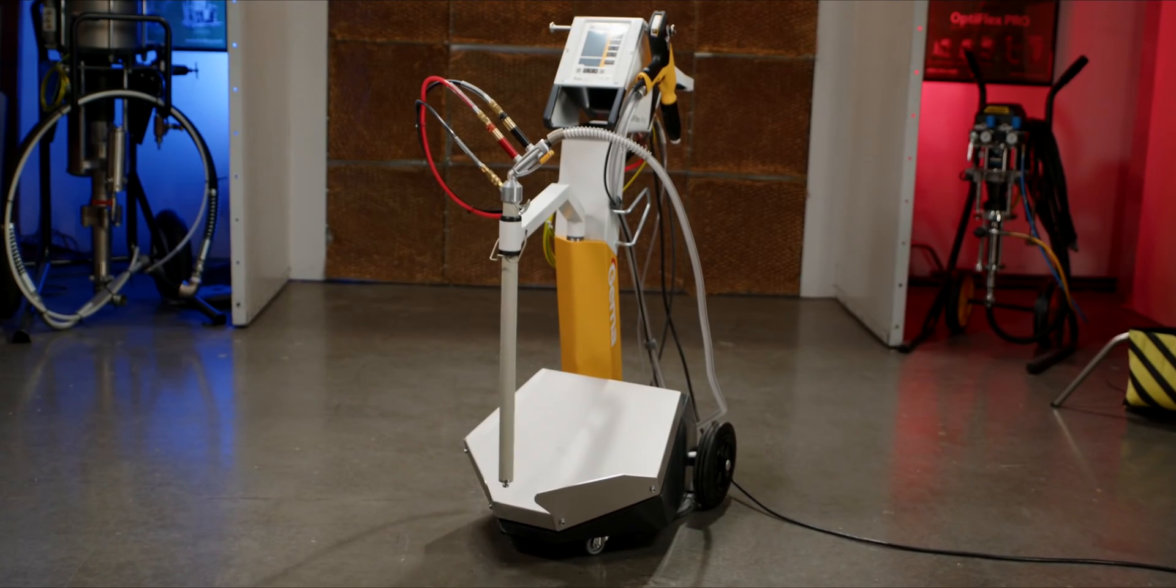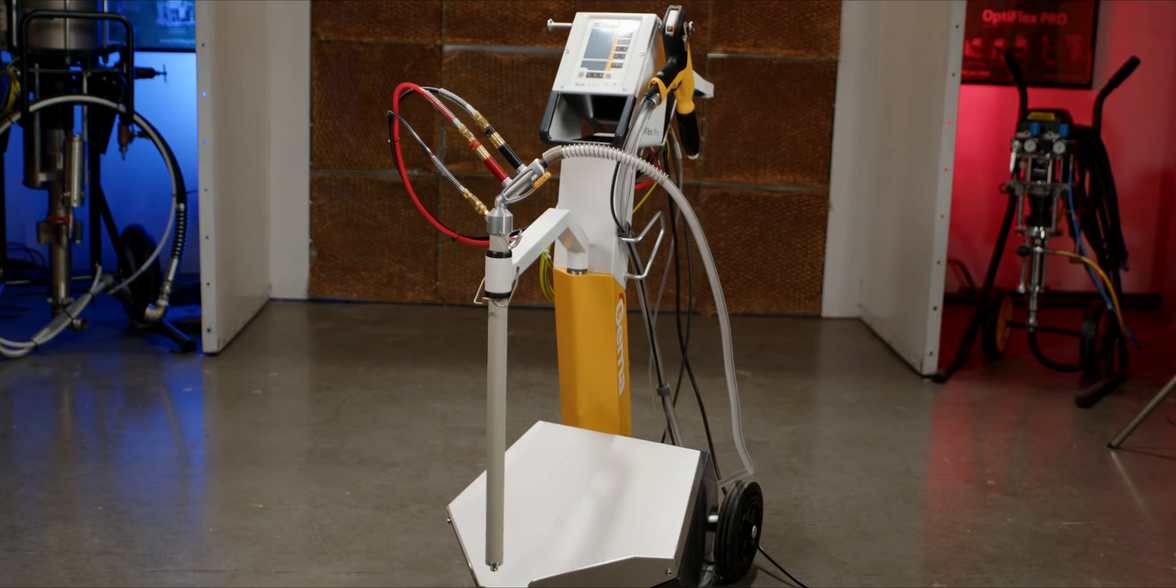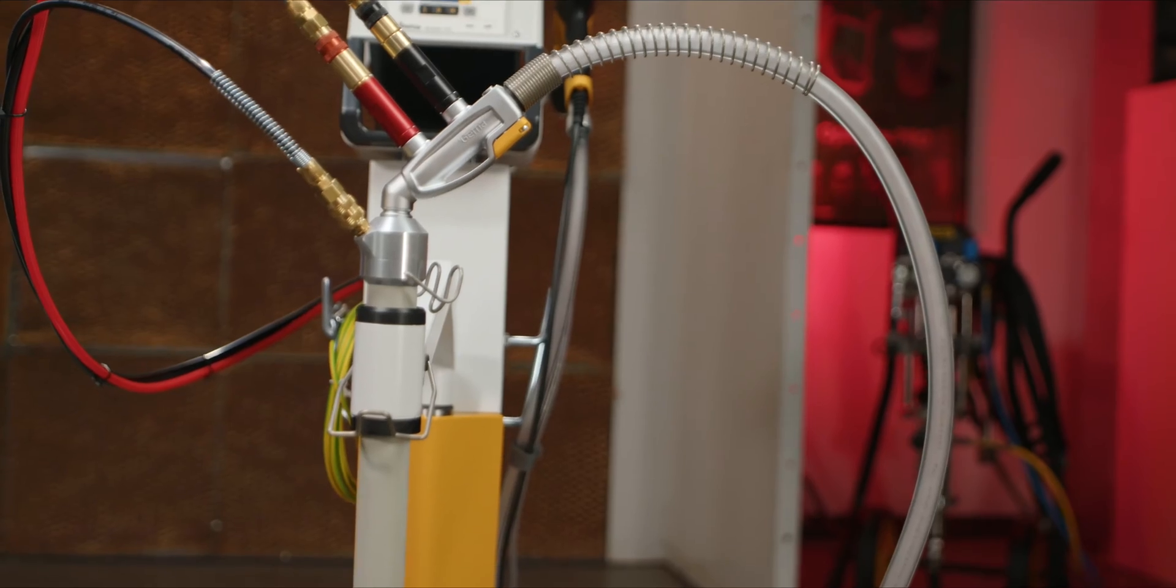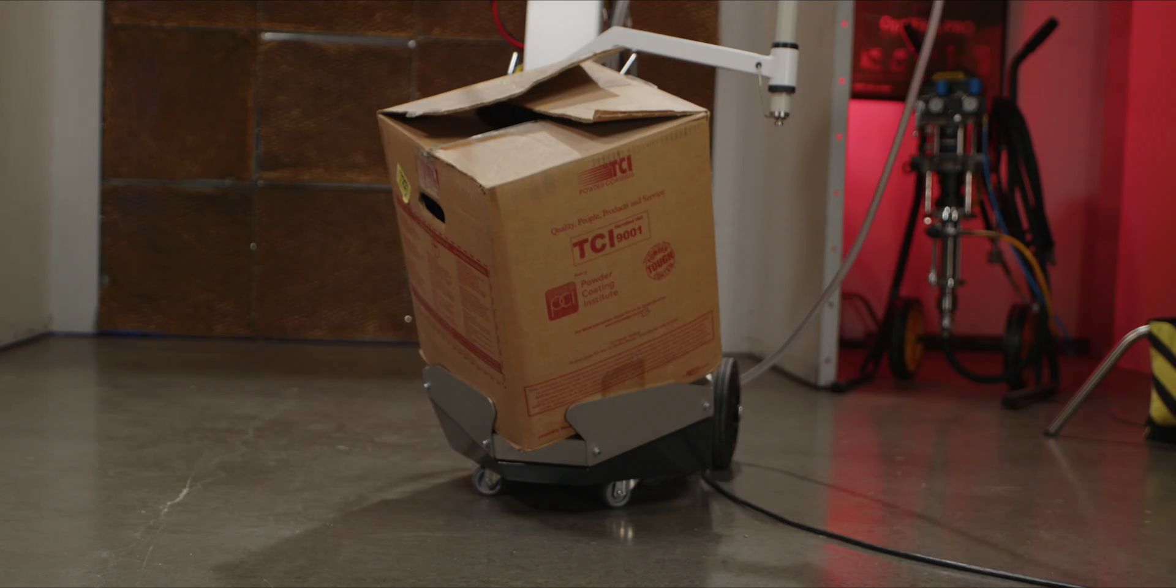The vibratory box feeder is our most popular model, great for fast color changes out of the original boxes your powder typically comes in. This model has an angled vibratory platform so that the equipment can completely empty the powder box.